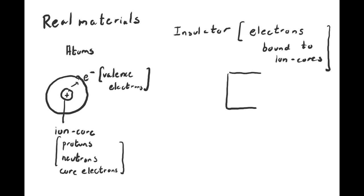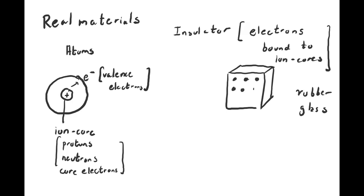Insulators are materials where electrons are essentially bound to the ion core. Examples of insulators include rubber and glass — these are made of atoms with ion cores and bound valence electrons. When you apply an external electric field to this system, nothing happens. The electrons bound to the ion cores don't move far, and this material does not conduct electricity. That's why it's called an insulator.